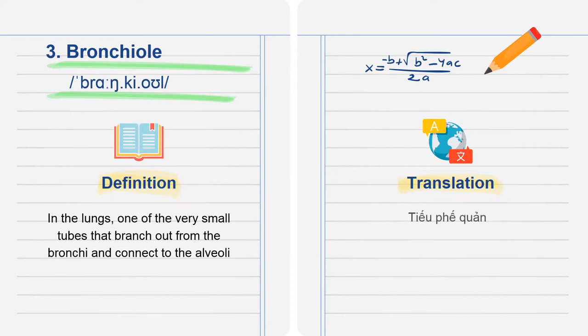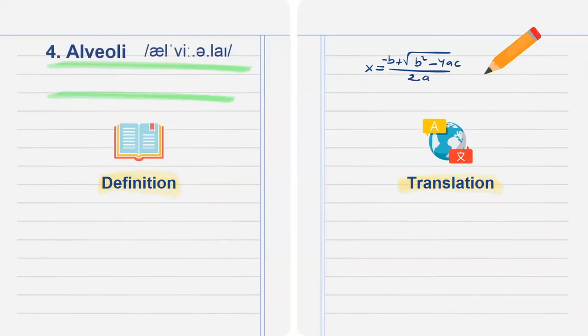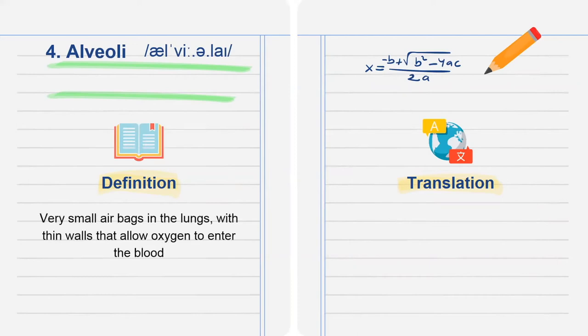Translation. Next is alveoli. Very small airbags in the lungs with thin walls that allow oxygen to enter the blood. Translation.